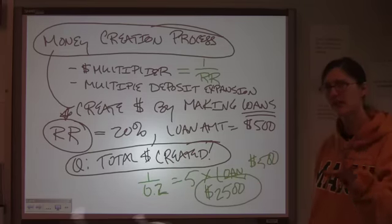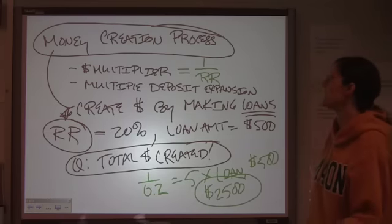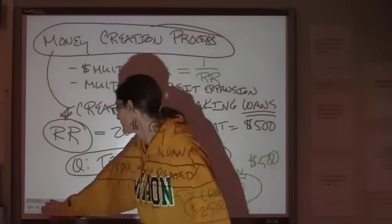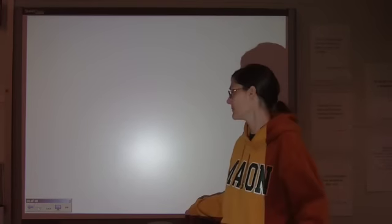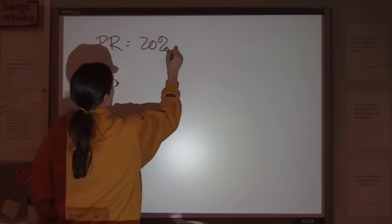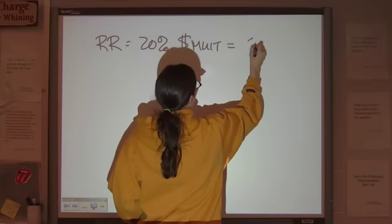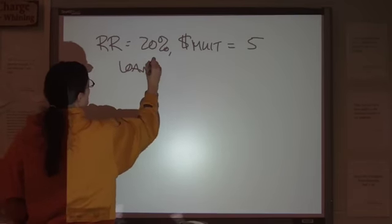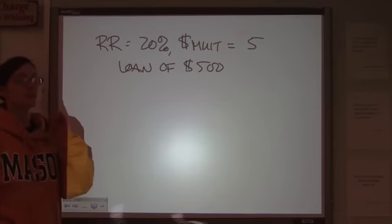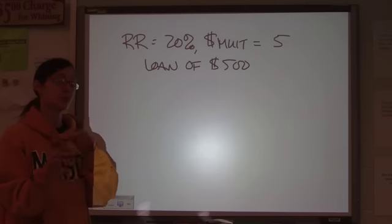Now, how do we get from a $500 loan to a $2,500 increase? It's through the process of multiple deposit expansion. How does that work? I'm just going to use these same numbers again. Reserve ratio of 20%, money multiplier of 5, loan of $500. Now, this is potentially what will happen in the banking system. We'll talk about how it may not actually play out in just a minute.